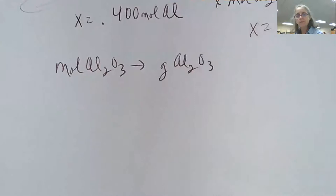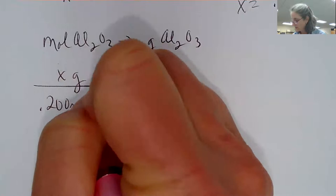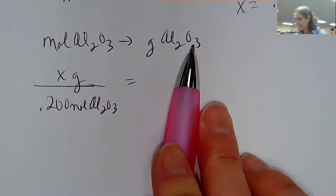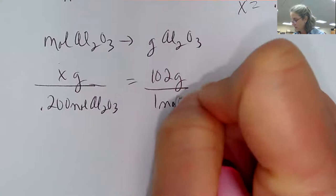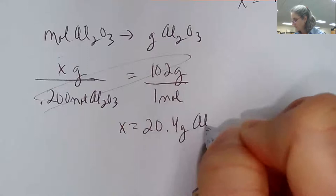The last step is to go from moles of aluminum oxide to grams of aluminum oxide — just like we did in unit two, repurposing the same approach. I put 0.200 moles of aluminum oxide on the bottom and find how many grams that is. I need the molar mass: two times 27 (for aluminum) plus three times 16 (for oxygen), which gives about 102 grams per one mole. Cross multiplying, x comes out to be 20.4 grams of aluminum oxide.